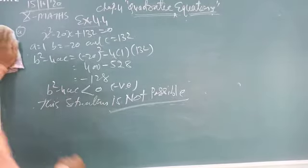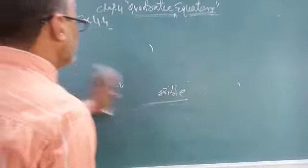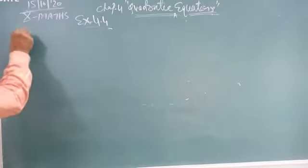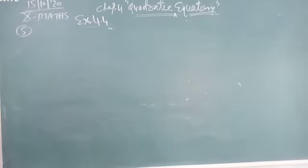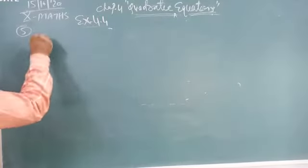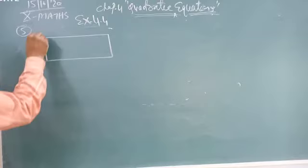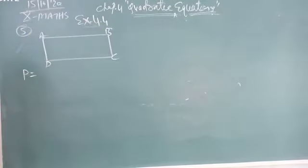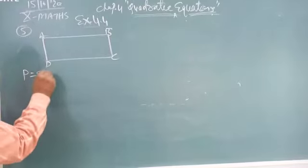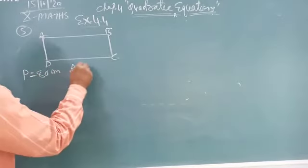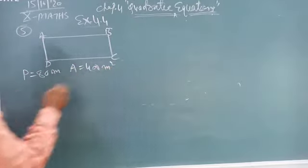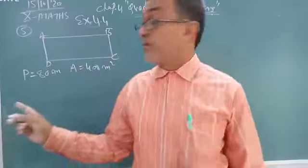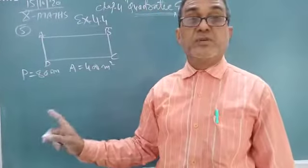Now last question, fifth number, question number 5. Last question of this exercise. It is possible to design a rectangular park. Same, just like that, a rectangular park. Suppose ABCD is a rectangle. Now perimeter is given 80, and area, perimeter is given 80 meters and area is 400 square meters. You know that what is the formula of perimeter? Perimeter is 2 into length plus breadth.